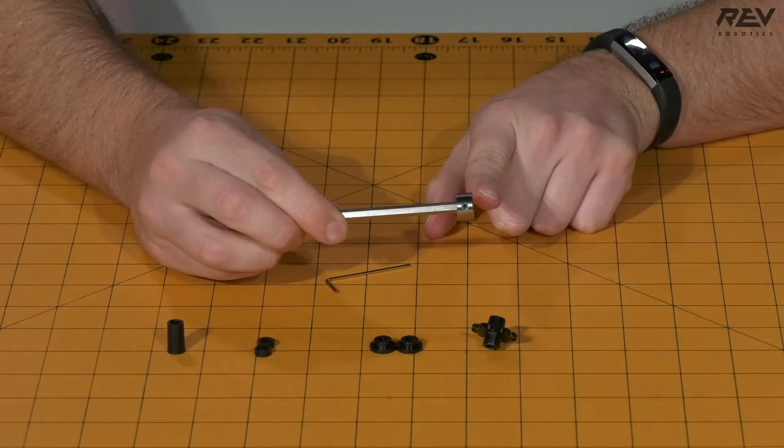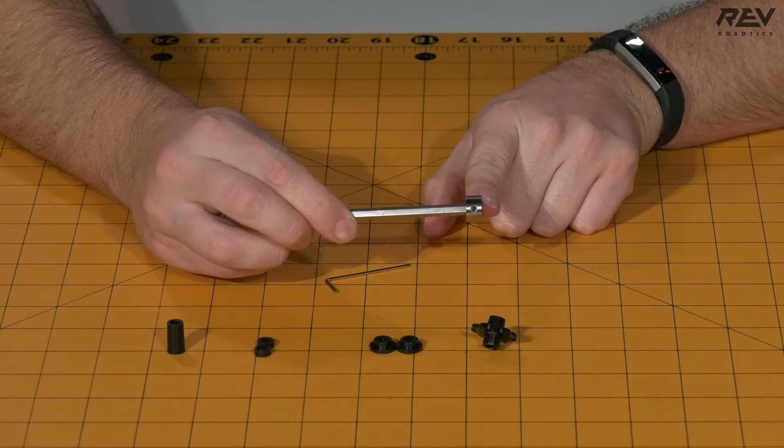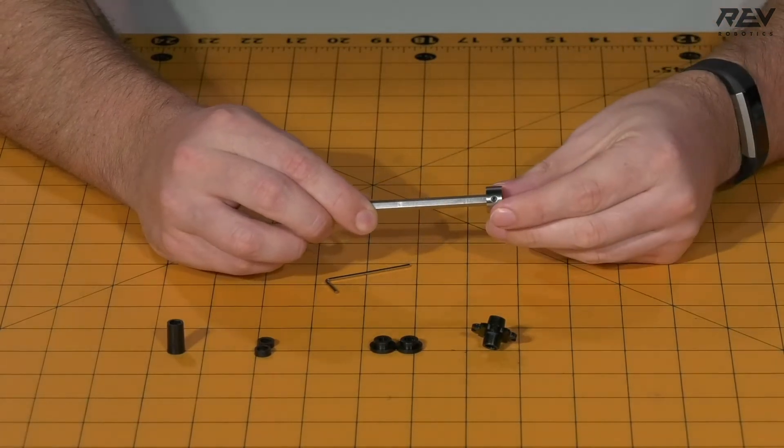You want to make sure the shaft collar is flush with the end of the hex shaft for the rest of the piece placement for this sub-assembly.